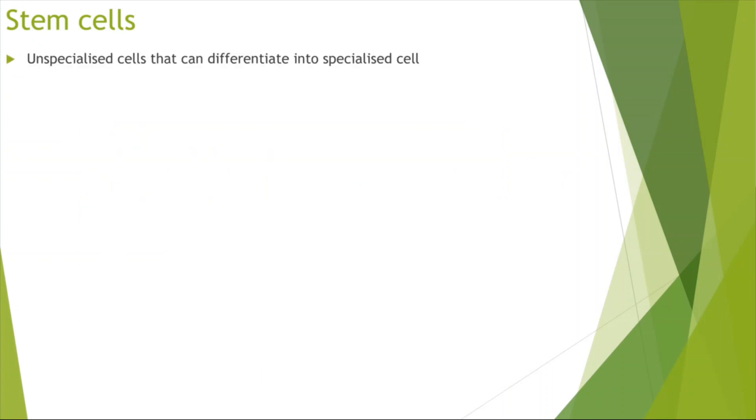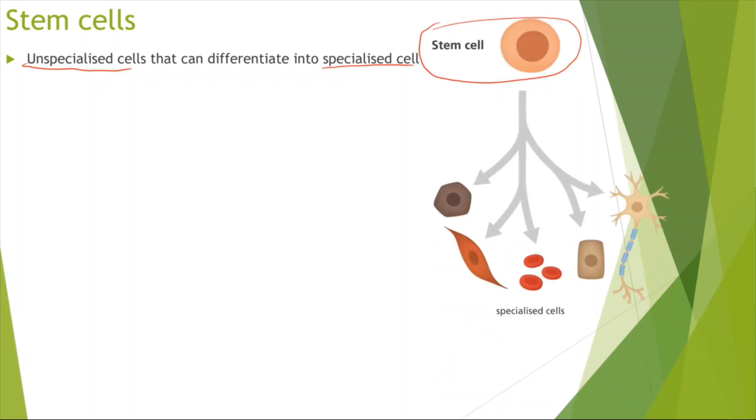So just looking at the definition of what stem cells are. Stem cells are just unspecialized cells that can differentiate into specialized cells. So first we start with a stem cell that's a completely undifferentiated cell. It's not specialized, but then it can differentiate into more specialized cells which will be used in our body. So for example muscle cells, blood cells, skin cells, nerve cells and other cells we need. So differentiation is just a process by which stem cells become specialized.